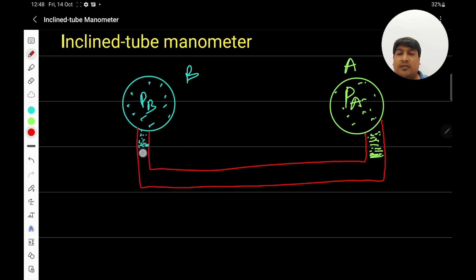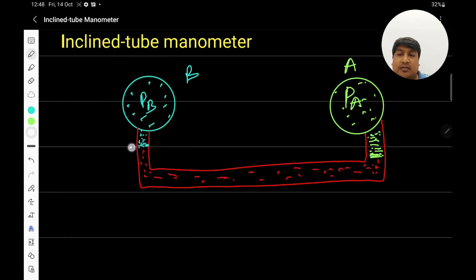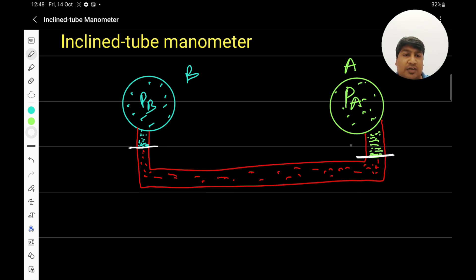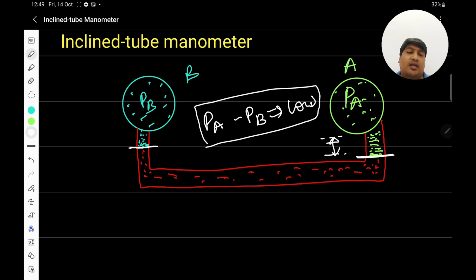A third fluid is inserted into the tube for the measurement of pressure. To measure the pressure difference between the two points, we have to figure out the difference in levels: the liquid in the left tube is at one level and the liquid in the right tube is at another. Sometimes the difference between these two levels is very low, making it very hard to differentiate. This kind of situation arises whenever the pressure difference between the two chambers is very low. In such scenarios we need to use an inclined tube manometer.